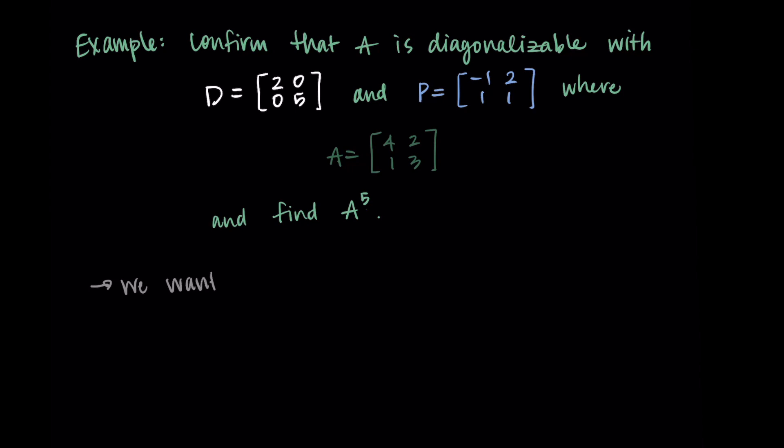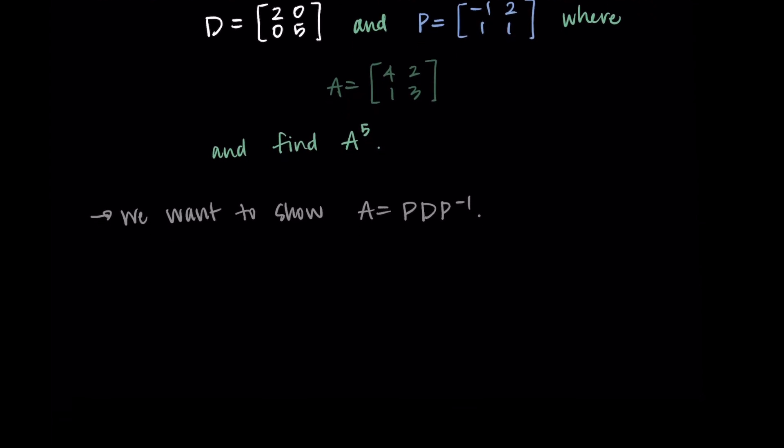To start, we're going to show that A is equal to P, D, P inverse. I'm going to compute P times D times P inverse and make sure we get A. In order to do this, we'll need the inverse matrix of P. Let's compute that now.